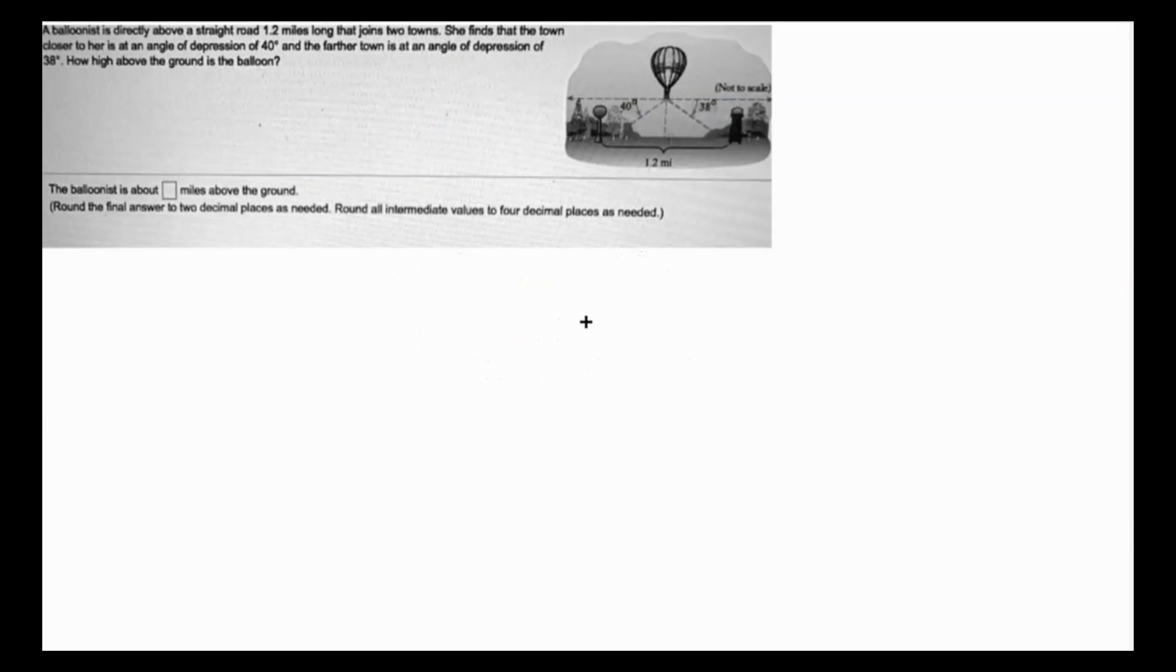The situation is better represented as a separate figure. So this is the first angle of depression and this is the second angle of depression. The road distance between the two towns is 1.2 miles. This angle is given as 40 degrees and this is 38 degrees, so we need to find this particular height h.